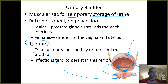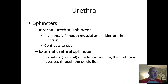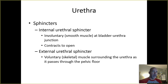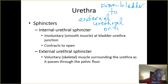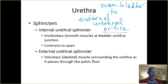If you get a bladder infection, the bacteria causing the infection are often in that trigone area. The urethra is the tube which carries urine from the bladder to the external urethral orifice — the opening to the outside of the body. There are two sphincters that regulate whether urine flows into the urethra and out of the body.